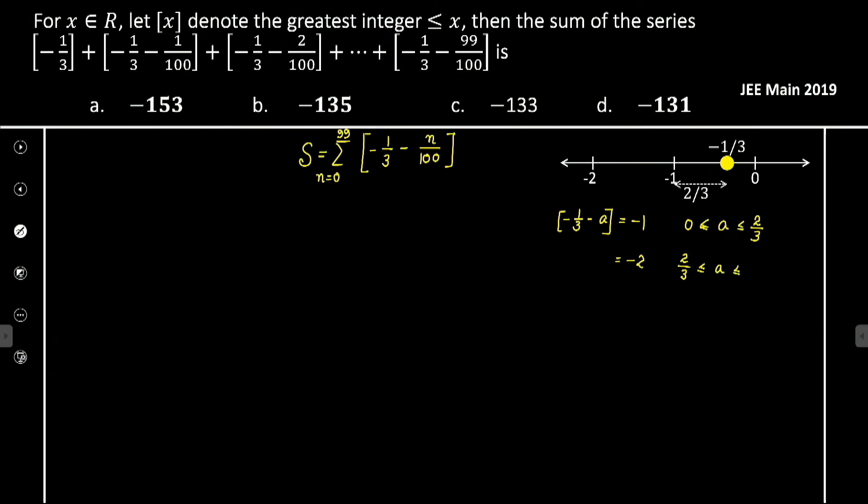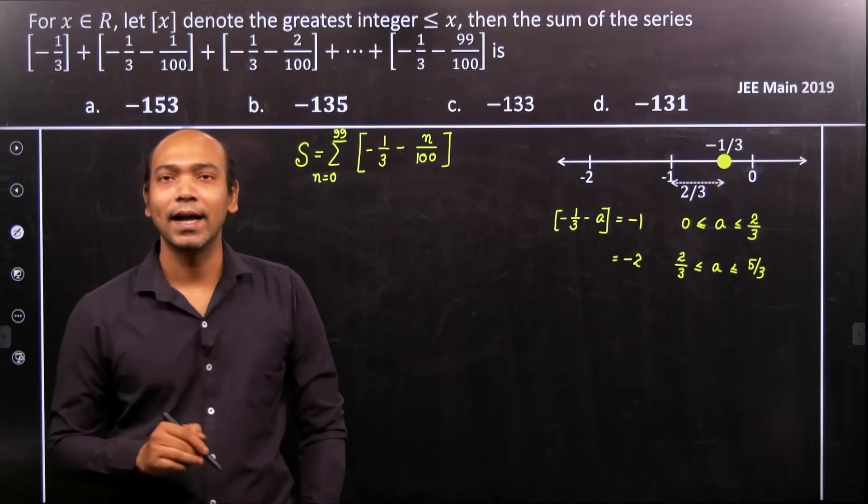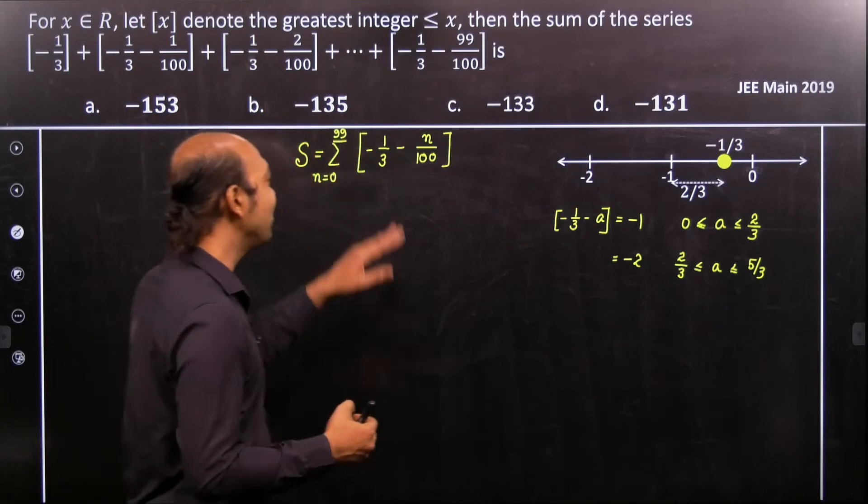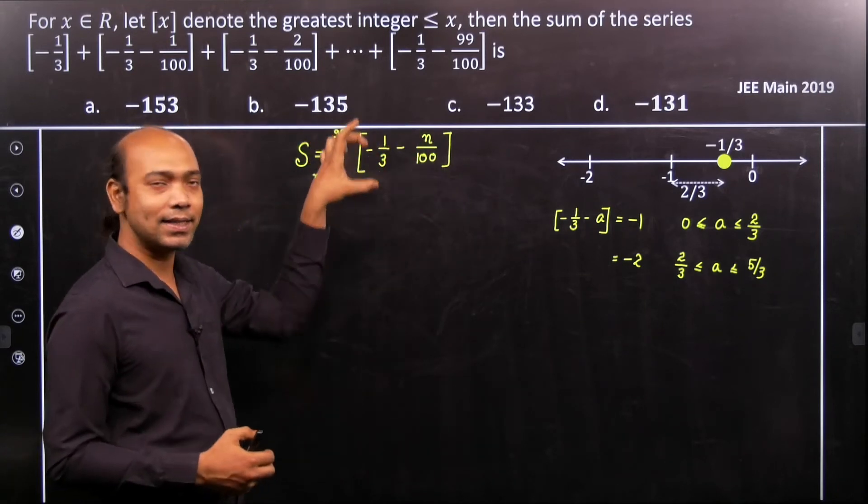We can see that it's less than or equal to 5 by 3. Now we have to observe how this n value will vary, then only we can divide this series.